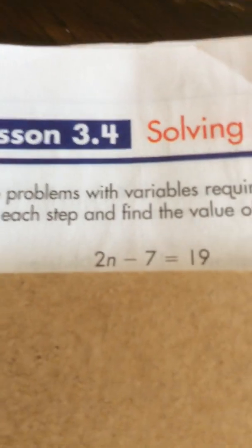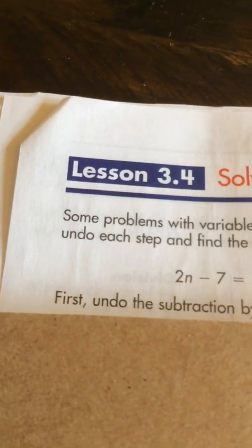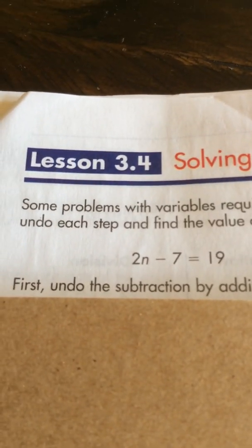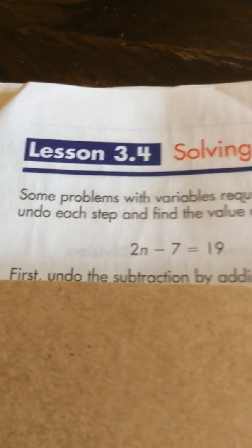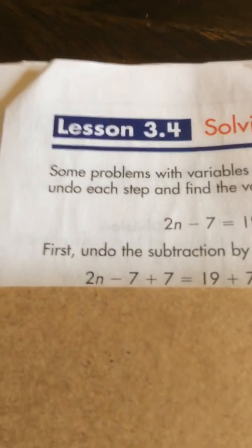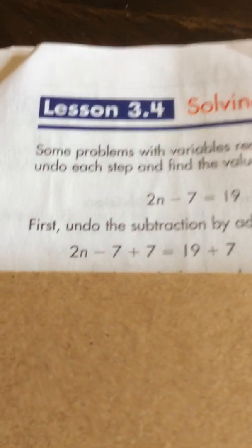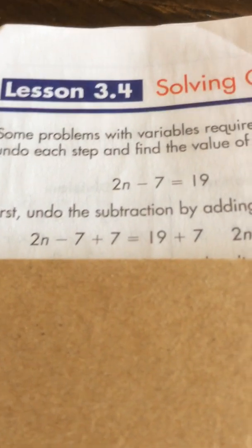So we are given by example 2n minus 7 equals 19. So the first step is undo the subtraction by adding it. So you can see negative like minus 7, you have to make it plus 7, right? Yes, so you have to undo it to change it to isolate the number. 2n minus 7 is changed to plus 7, 19 plus 7. So you can see it's 26.